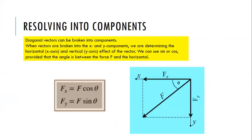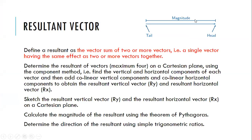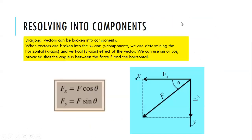We discussed how to represent a vector quantity — as you can see on the diagram on the top right. We also discussed resolving into components: breaking down a diagonal vector, one that's not on the x-axis or y-axis, into simpler smaller pieces. Adding them up gives you the vector sum F. That's what we call Fx, the horizontal component, and Fy, the vertical component.